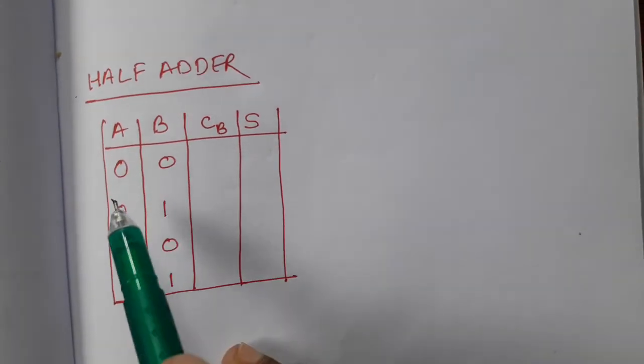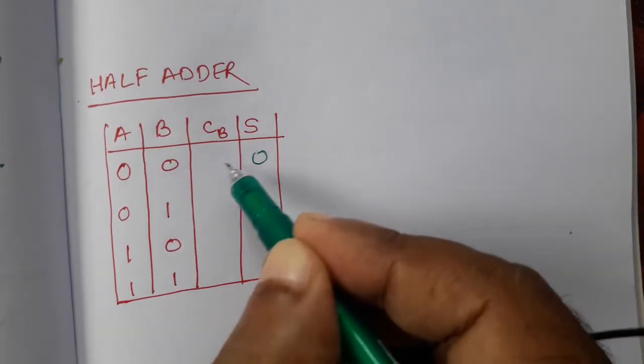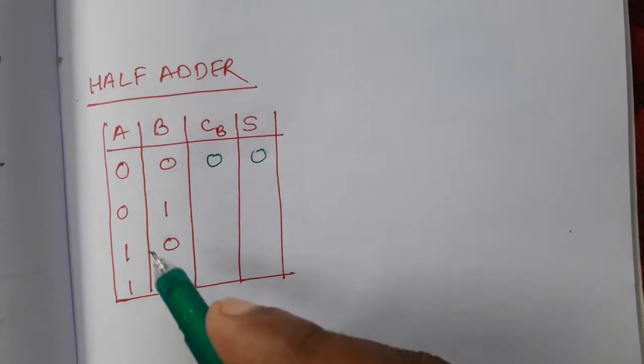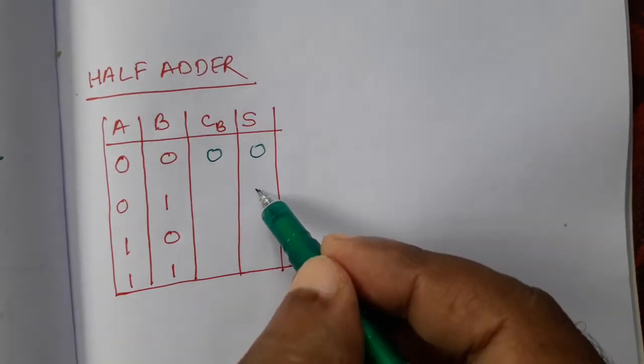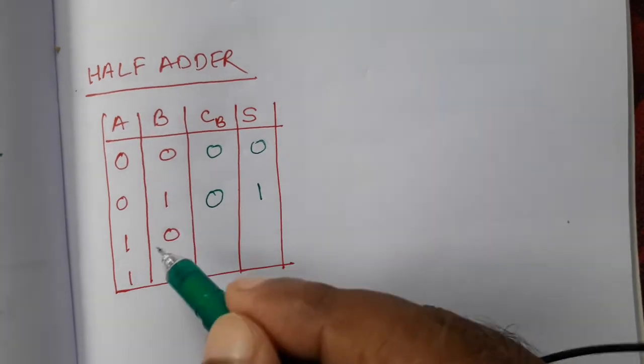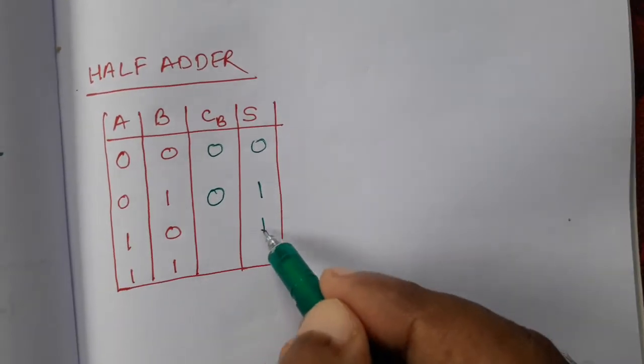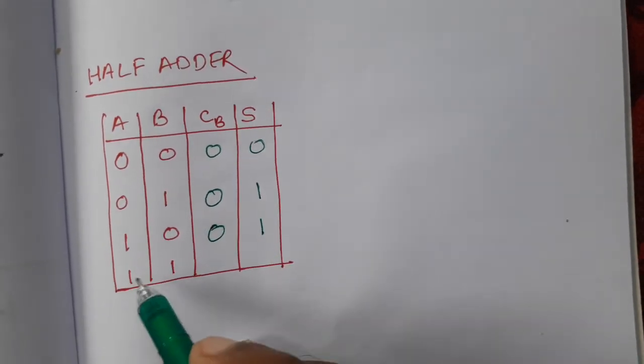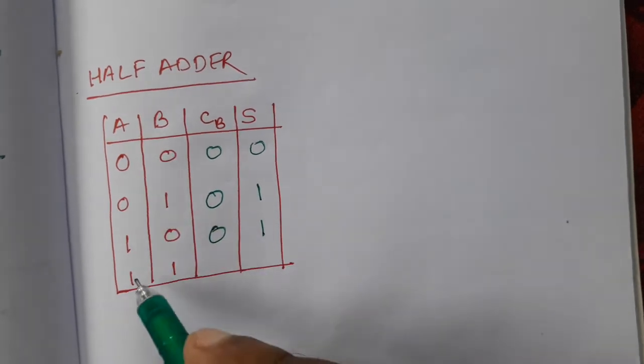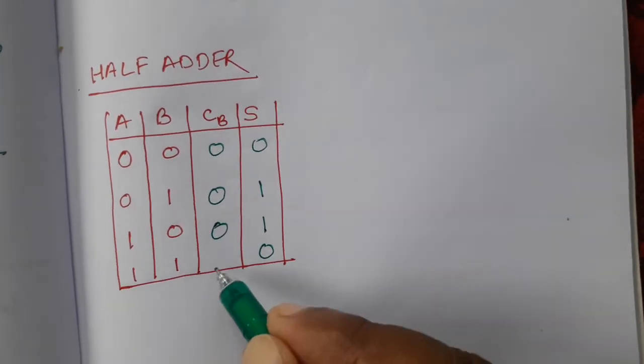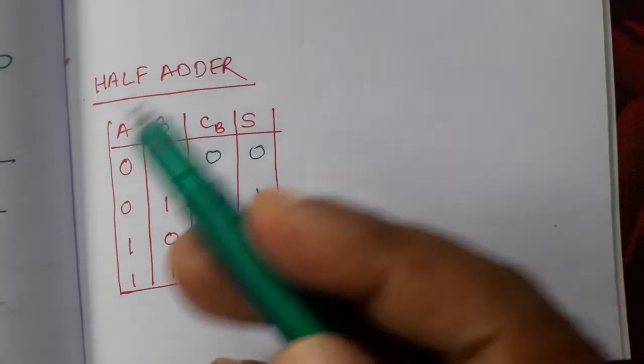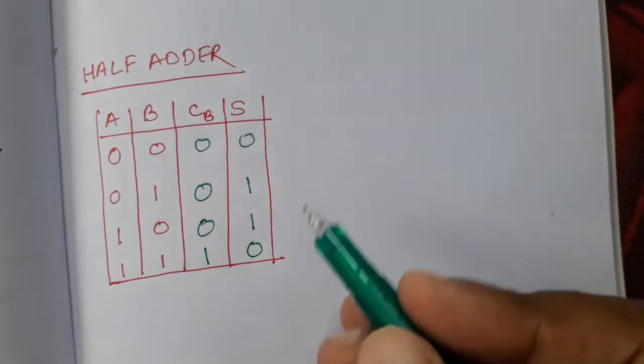So what is the value? Let us see. 0 plus 0, sum will be 0 and carry also will be 0. 0 plus 1, sum is 1, carry is 0. 1 plus 0, sum 1, carry is 0. That 1 1, that is simple binary addition, so 1 1, sum is 0 and carry will be 1. So that is our half adder truth table.